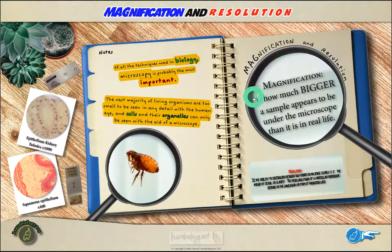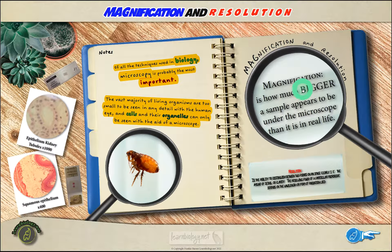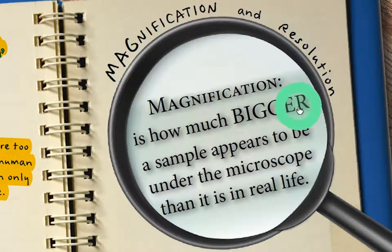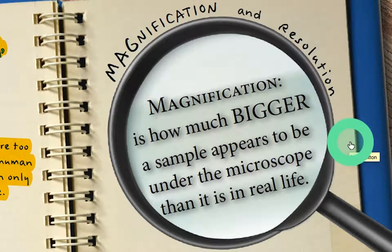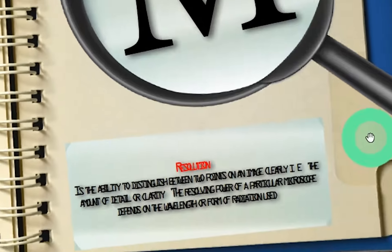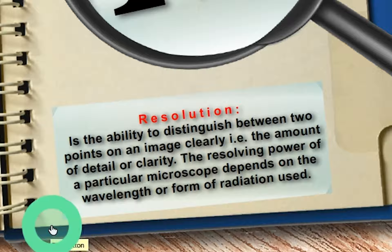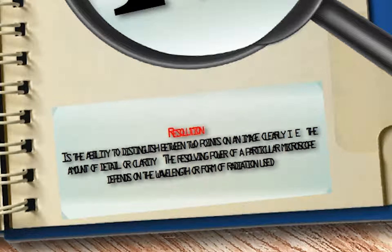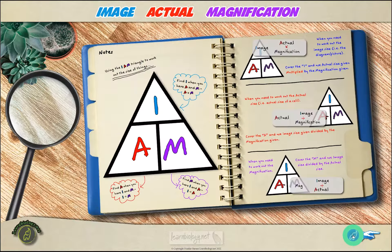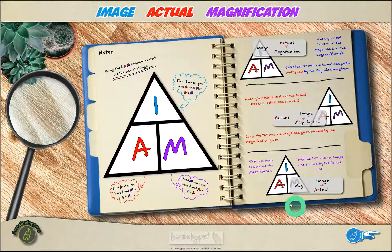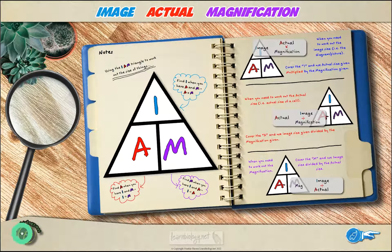So what is magnification? Well, magnification quite simply is how much bigger a sample appears to be under the microscope than it is in real life. And resolution? That's just the ability to distinguish clearly between two points on the image. So the amount of detail or clarity, and the resolving power of a particular microscope depends on the wavelength or the form of radiation used. Right, so we have those key terms boxed off. Next we need to use the I am triangle to work out the size of the things that you see. Let's take a look.